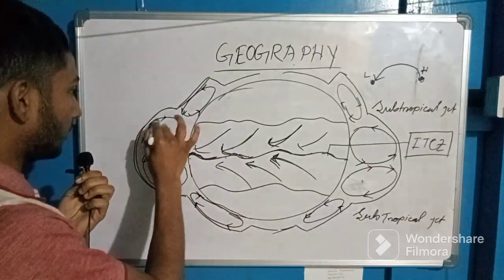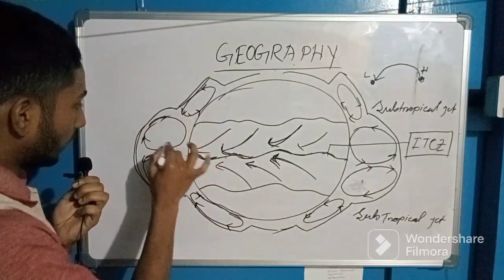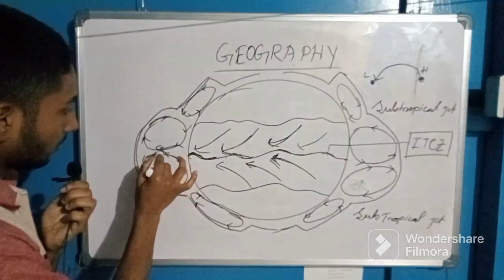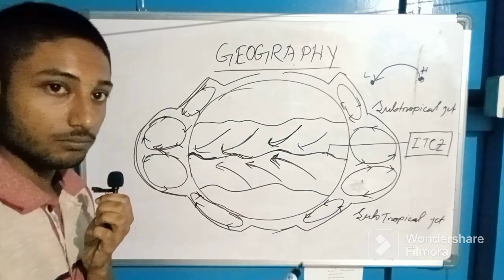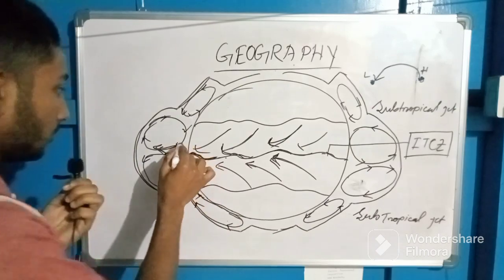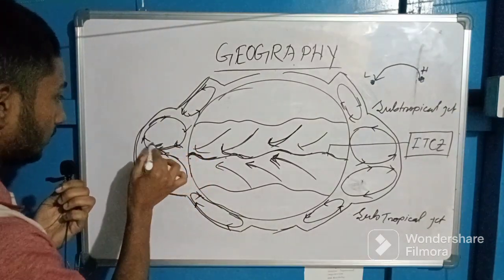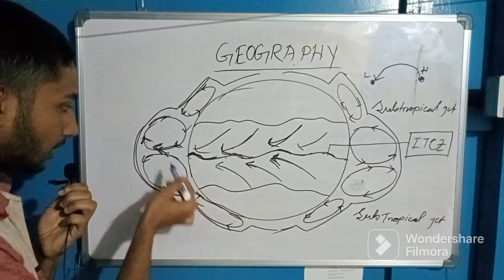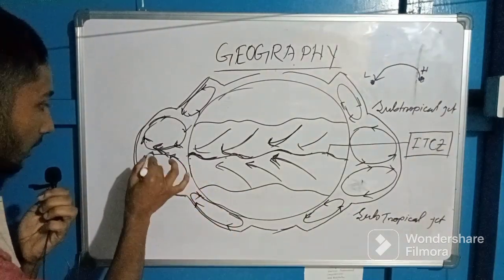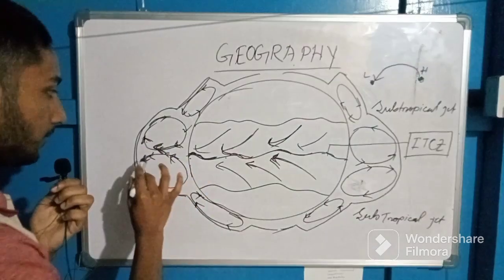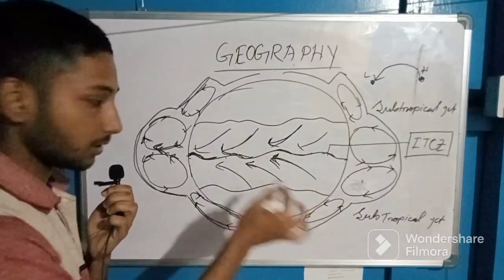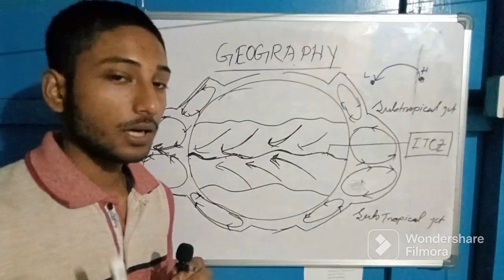Here you can also see the pressure belts where the air flows from one region to another and goes in an upward direction. You can imagine it in a 3D model — air comes here and goes upward, and in the southern hemisphere also it goes in an upward direction. So a low pressure belt is created here, which means the ITCZ is created in the low pressure belt nearer to the equator.